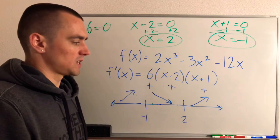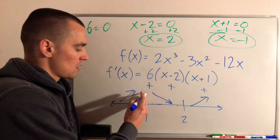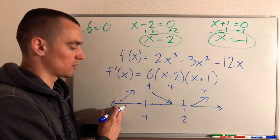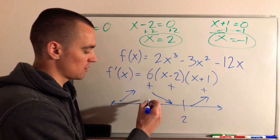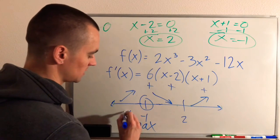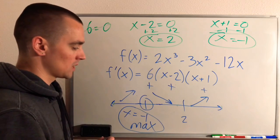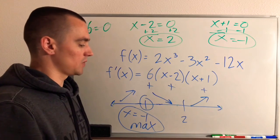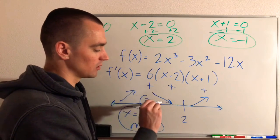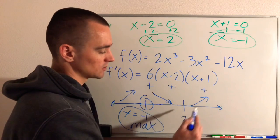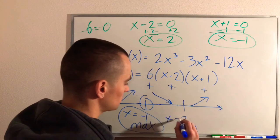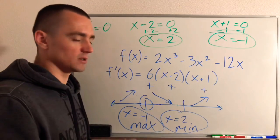The first derivative test says: if we have a critical number where our function is increasing to the left and decreasing to the right, then that critical number is a local maximum. So x equals negative 1 is a local maximum. The first derivative test also tells us: if our function is decreasing to the left of a critical number and increasing to the right, then that critical number is a local minimum. So at x equals 2, that critical number is a local minimum.